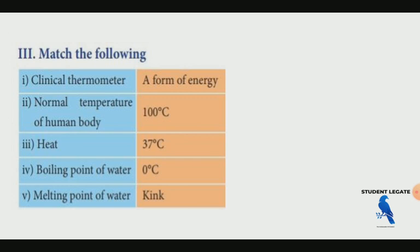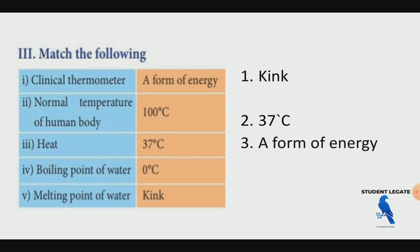There will be a true or false section. The normal temperature of a human body is 37 degrees Celsius. Heat is a form of energy. The boiling point of water is 100 degrees Celsius. The melting point of water is 0 degrees Celsius.